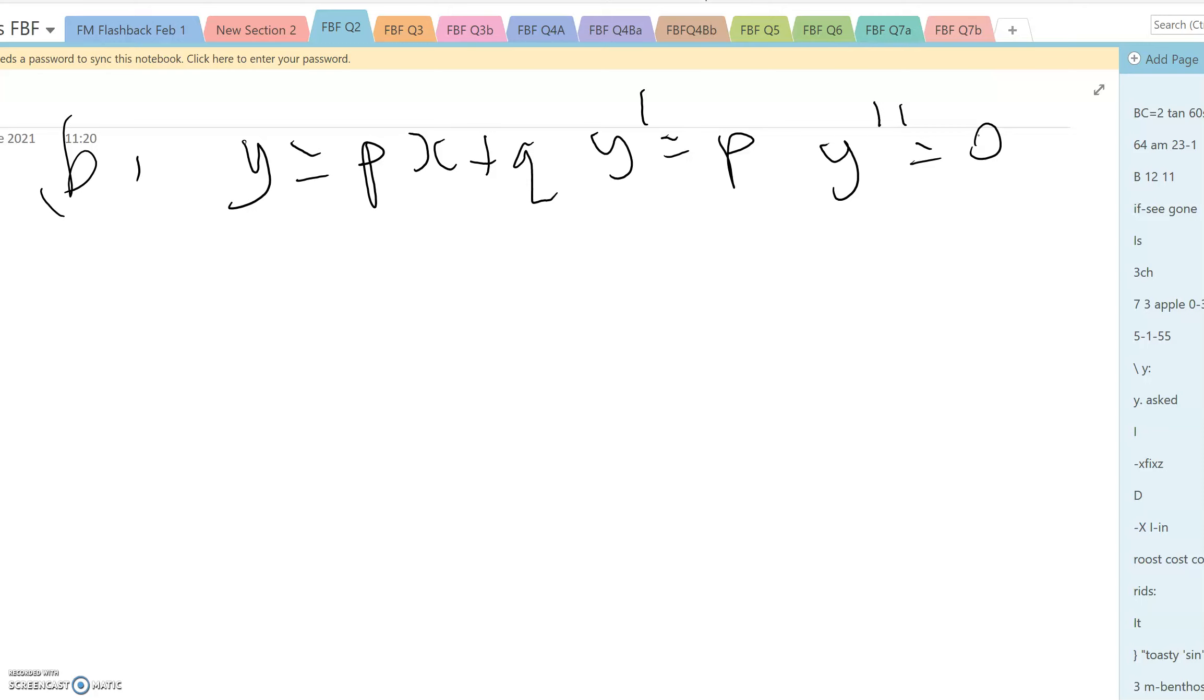Substituting this in, we get 0 minus 6p plus 10 lots of px plus q. And that's got to equal 20x minus 22.